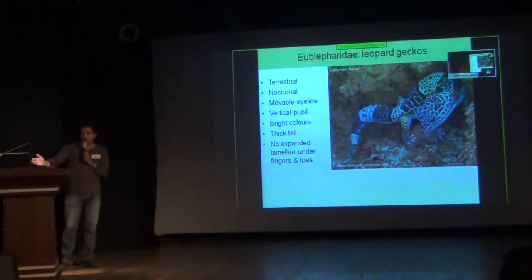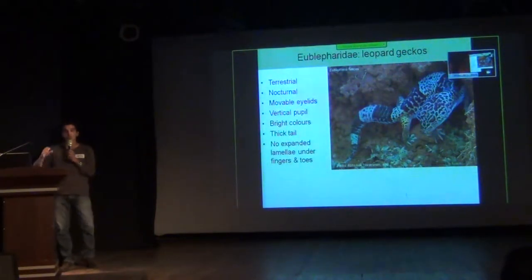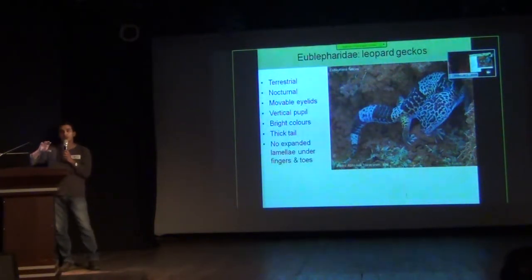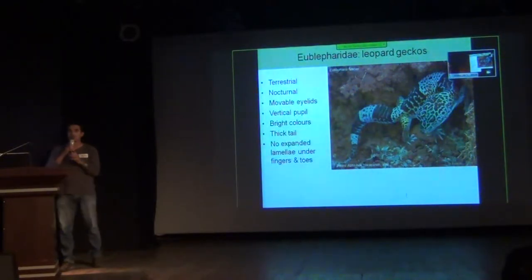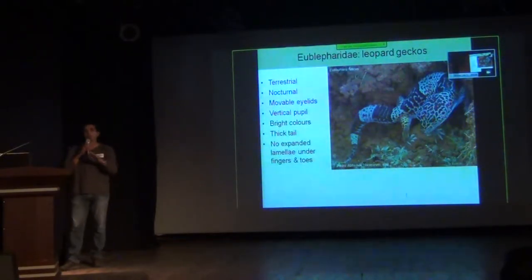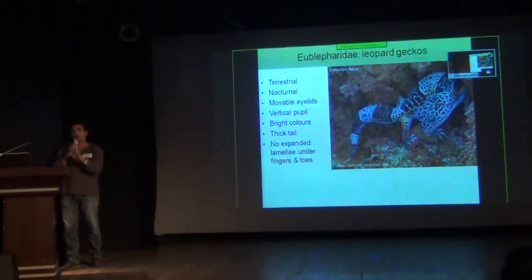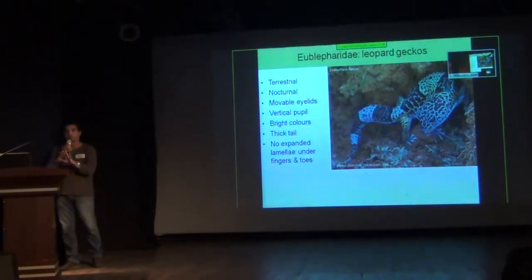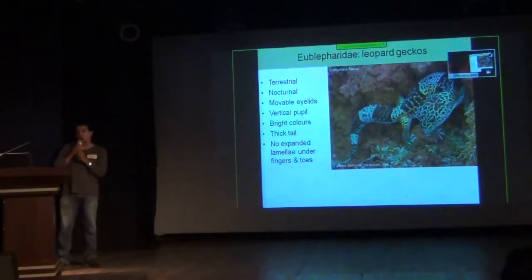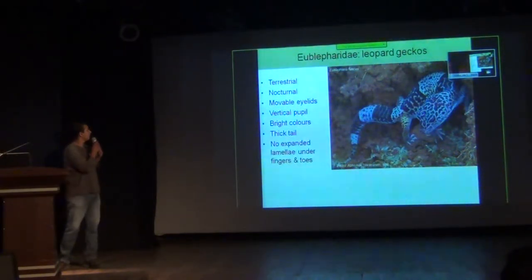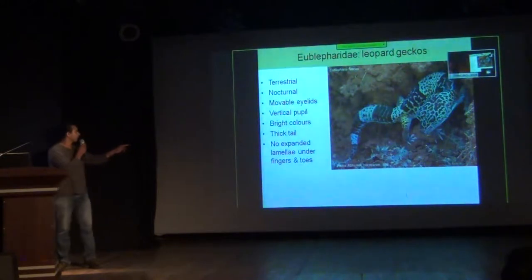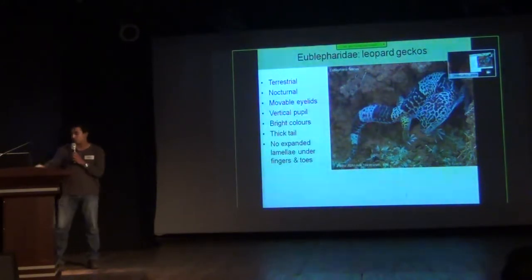Leopard geckos have vertical pupils and very bright colours. You can also notice a very thick tail, and they don't have particular expansions of lamellae under the toe. We have about four species in India.